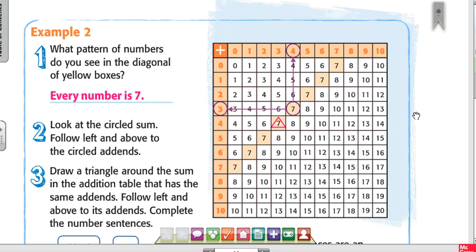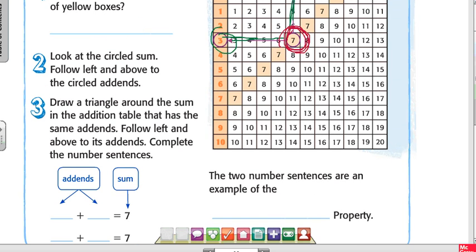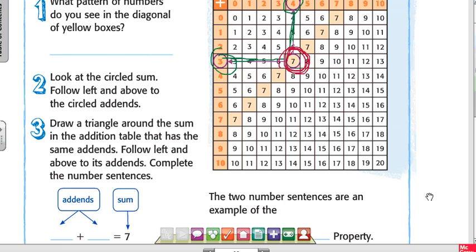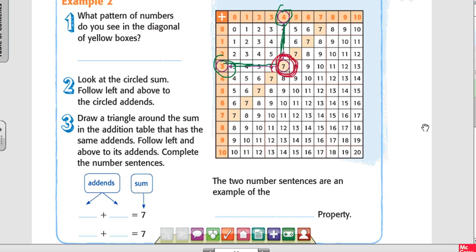It says look at the circled sum. You see that seven in the circle? Follow left and above to the circled addends. So if I go straight up, I get four. If I go to the left, I get three.